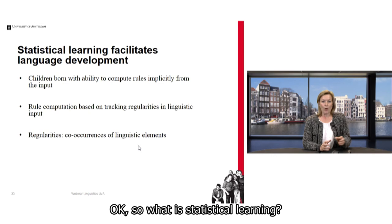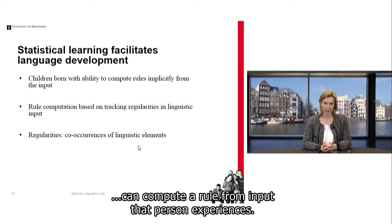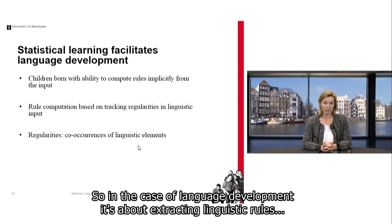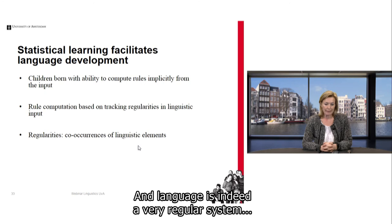So what is statistical learning? This is the ability to compute a rule from the input a person experiences — rule computation based on tracking regularities in the inputs someone experiences. In the case of language development, it's about extracting linguistic rules from the linguistic input a child hears. Language is a very regular system, meaning there are often language elements co-occurring, and I'll show you a few examples.